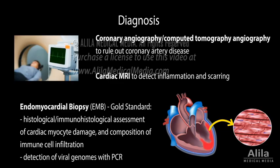Autoimmune myocarditis is diagnosed when there is immunohistological evidence of myocarditis on EMB, but viral PCR is negative.